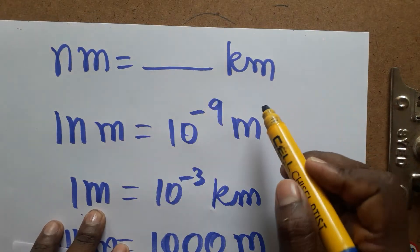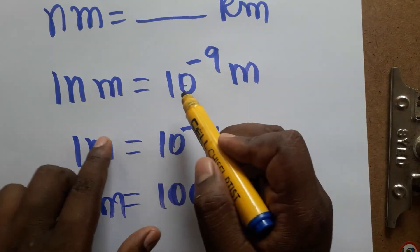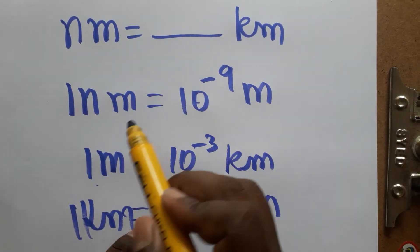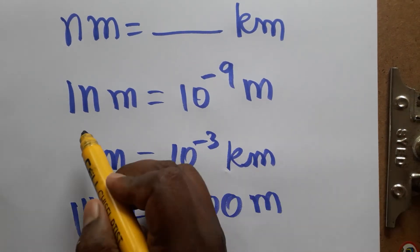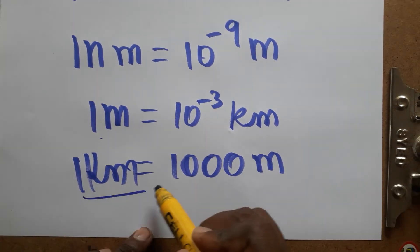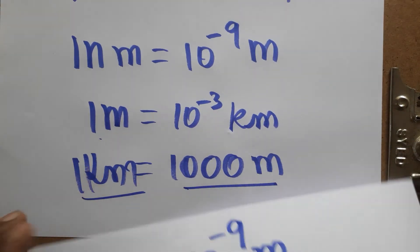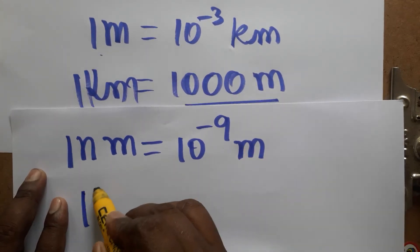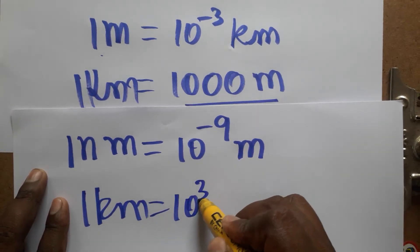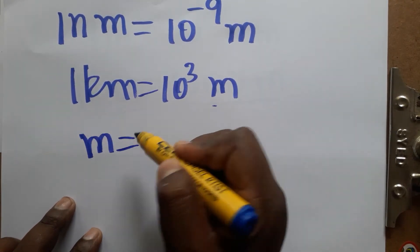Today we are going to learn: one nanometer is equal to how many kilometers. One nanometer is 10 power minus 9 meters. One kilometer is a thousand meters, which means one kilometer is equal to 10 power 3 meters.